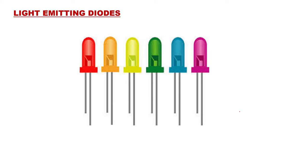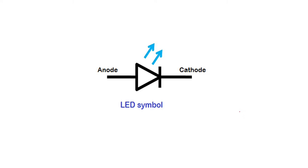Whenever this p-n junction is forward biased, it emits light. The LED has two terminals — a longer terminal called the anode and a shorter terminal called the cathode. The anode connects to the p-type semiconductor and the cathode connects to the n-type semiconductor. The symbol of the LED is similar to a diode with two arrows indicating the emission of light — it is a two-terminal device like a diode.